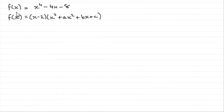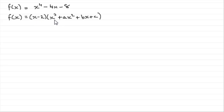In this part, we know already that f of x equals x to the 4 minus 4x minus 8. And we're told that f of x can be written as x minus 2, all multiplied by x cubed plus ax squared plus bx plus c. And we're asked to find out what these values of a, b, and c are.